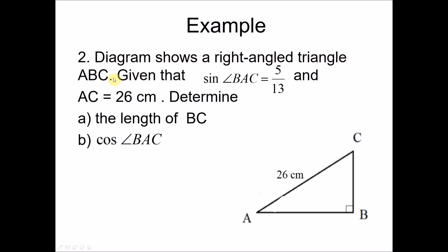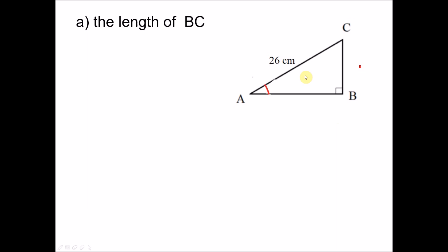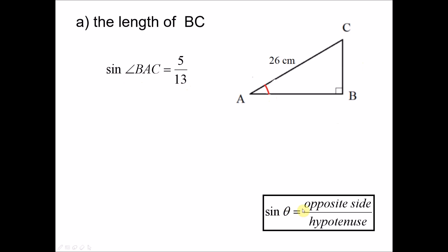Example 2: the diagram shows a right angle triangle ABC. Given that sine of angle BAC equals 5 over 13 and AC equals 26, determine the length of BC. For sine, the formula is opposite side over hypotenuse. So we need to rewrite this using this formula for angle BAC.